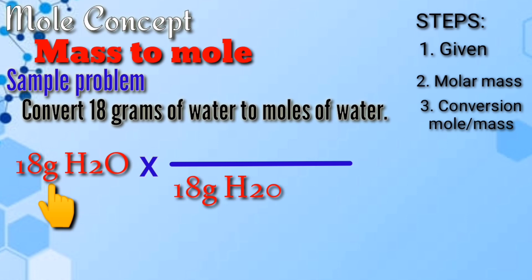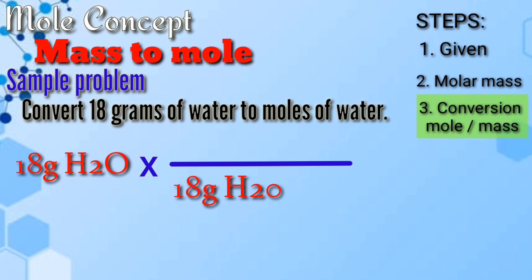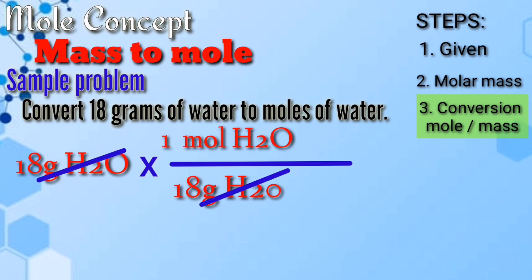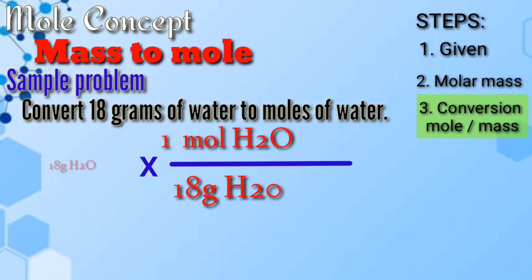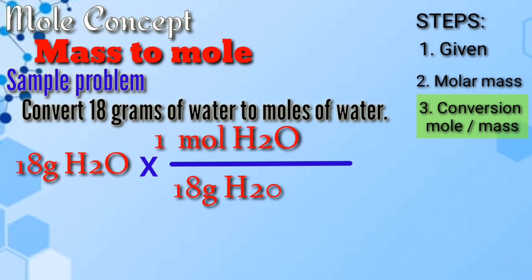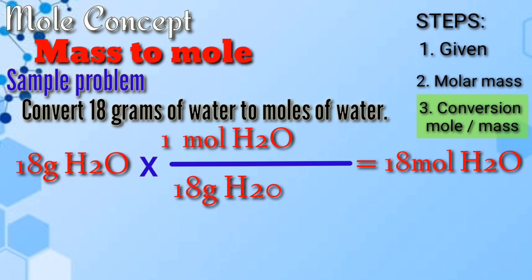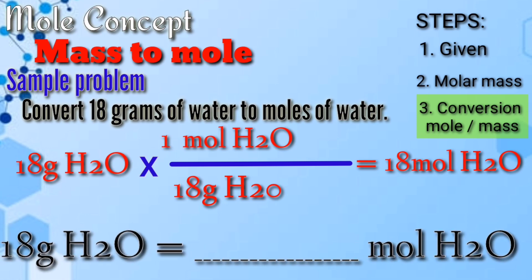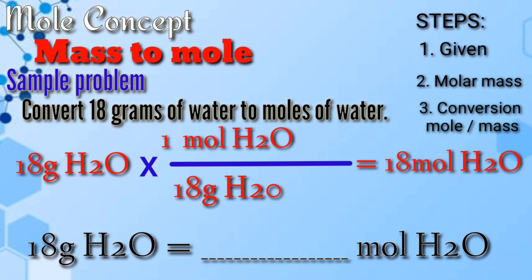Take note: if the given is in grams, the molar mass should be written below or as the denominator. Then, for the third step — the conversion between mole and mass — write at the top or as the numerator: 1 mole of water. We can now cancel out grams of water, leaving mole of water as the answer. Calculate: 18 times 1 divided by 18 equals 1 mole of water. Therefore, 18 grams of water is equal to 1 mole of water.